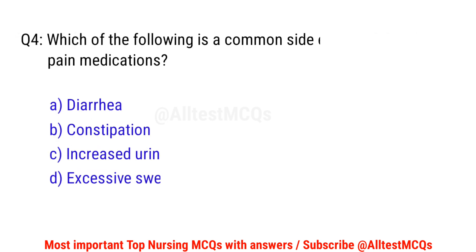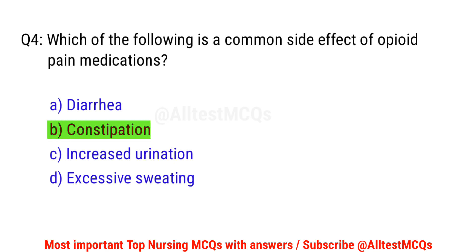Question number 4. Which of the following is a common side effect of opioid pain medications? The correct option is B: Constipation.